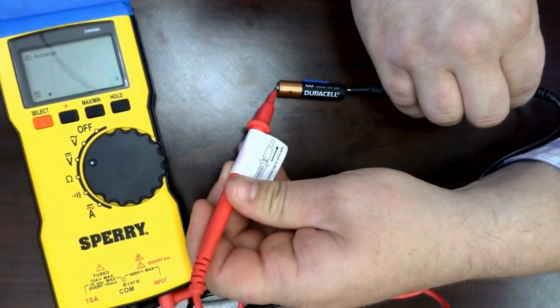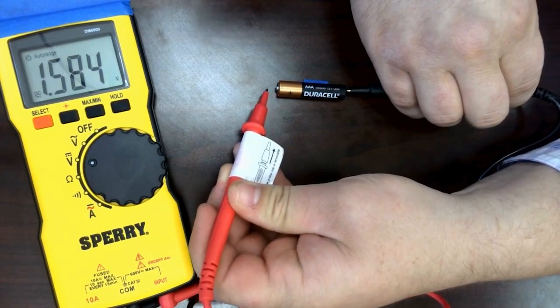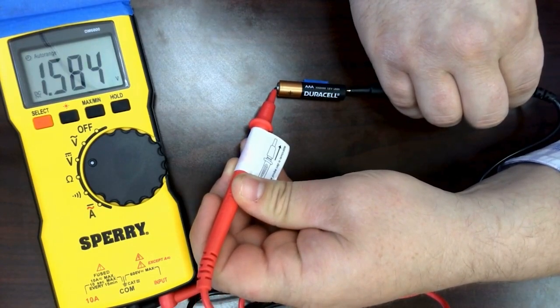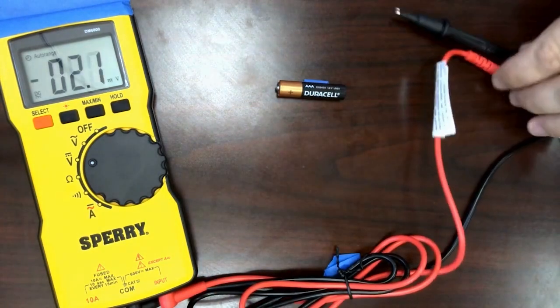Now we connect our multimeter to the positive and negative terminals of this battery and we see that it has a DC current of 1.584 volts, which is pretty close to what it's rated.